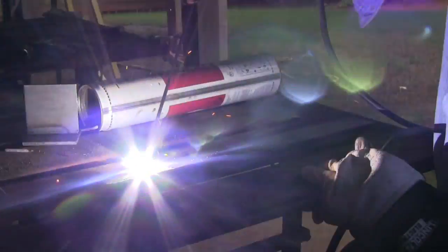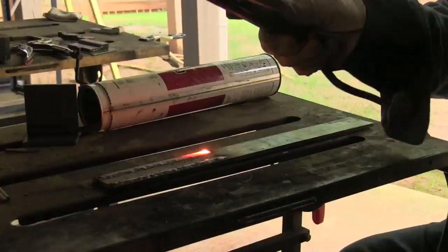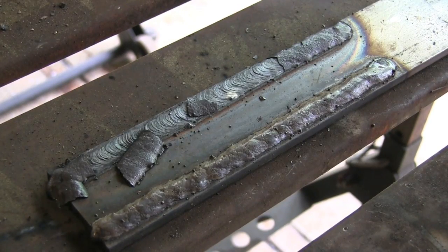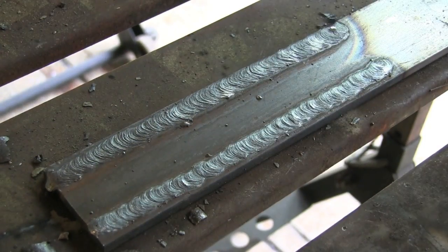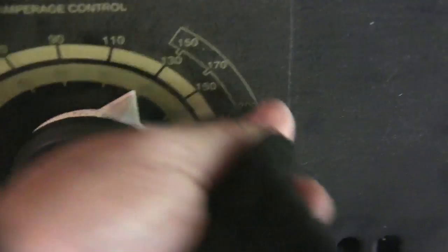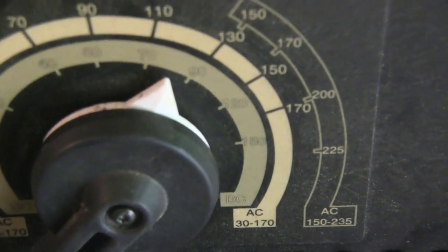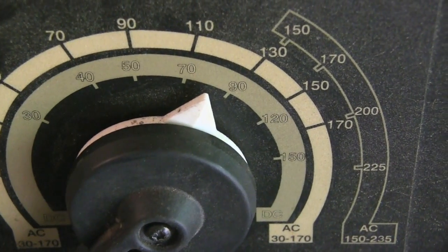This is the Lincoln Excalibur 7018 rod. It wasn't quite glowing at the end, but you notice the slag is coming off a whole lot better on the Lincoln than it is on the Hobart. I'm going to drop it down to about 80 because we're going vertical uphill now.